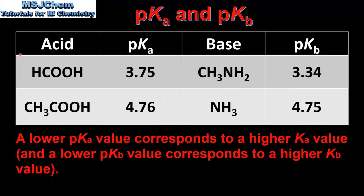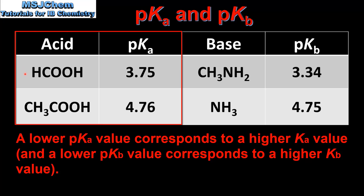In this table we have examples of weak acids and weak bases together with their pKa and pKb values. Starting with the weak acids — methanoic acid and ethanoic acid — the pKa of methanoic acid is 3.75 and the pKa of ethanoic acid is 4.76. The lower the pKa value the stronger the acid, so methanoic acid is a stronger acid than ethanoic acid because it has a lower pKa value.